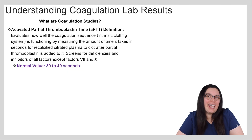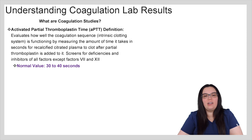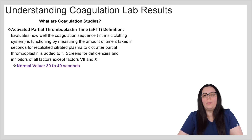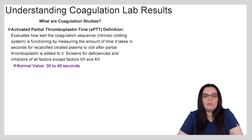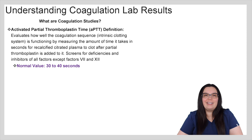Lastly, we're going to look at our APTT — activated partial thromboplastin time. It evaluates how well the coagulation sequence, the intrinsic clotting system, is functioning by measuring the amount of time it takes in seconds for recalcified citrated plasma to clot after partial thromboplastin is added to it. It screens for deficiencies and inhibitors of all factors except for 7 and 12. The normal value is 30 to 40 seconds.